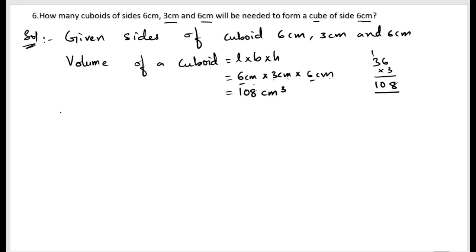Now let us find out the volume of a cube. The volume of a cube formula is side³. Here the side is given as 6cm, so 6cm³.